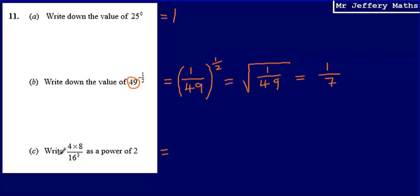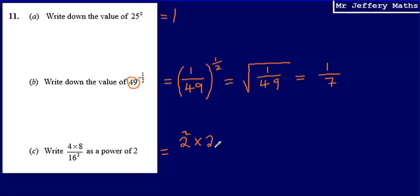For part c, we're asked to write 4 multiplied by 8 divided by 16 cubed as a power of 2. When we're asked to write something as a single power of 2, we're going to have to write all of our values as powers of 2. So instead of writing 4 as it is, we're going to say that 4 is the same as 2 squared. Then with 8, we can say that will be 2 cubed — 2 times 2 times 2. Then I'm going to divide that by...